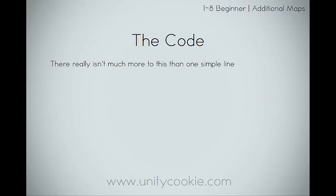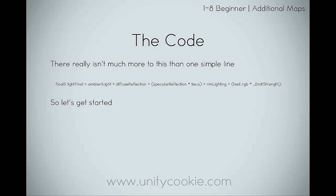There really isn't much more to this than one simple line — the light final. You add in the specular reflection multiplied by the texture alpha, because we store that in the gloss channel. And for the emission map, we add in the emission times the emission strength value. Let's get started.